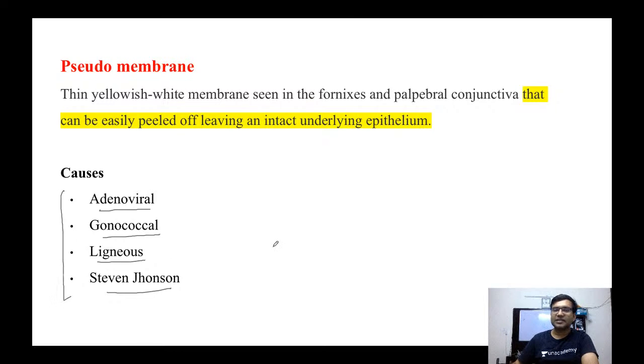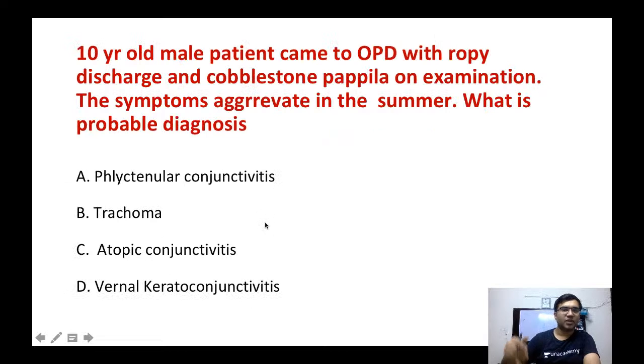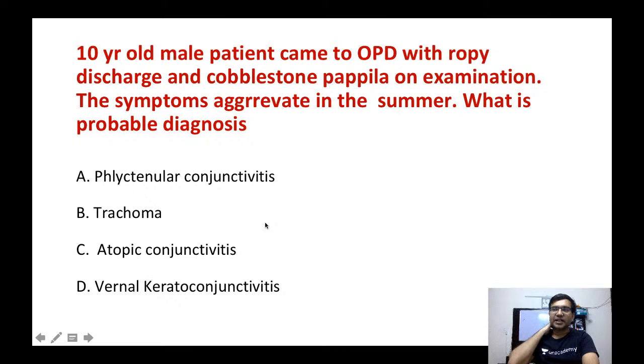Other causes of pseudomembranous conjunctivitis include adenoviral conjunctivitis, Neisseria gonorrhoeae, ligneous conjunctivitis, and conjunctivitis seen after Stevens-Johnson syndrome. Staph and Streptococcus pneumoniae usually do not cause pseudomembranous conjunctivitis.